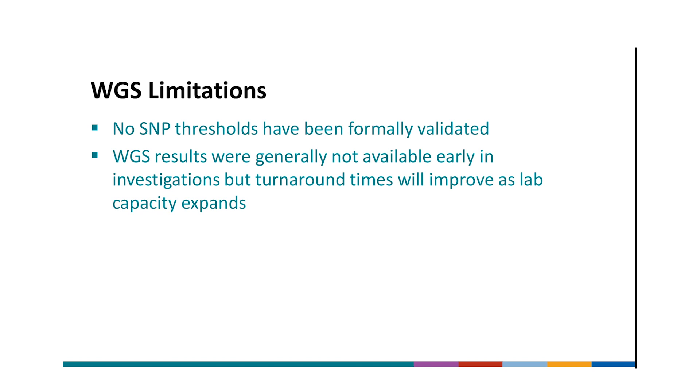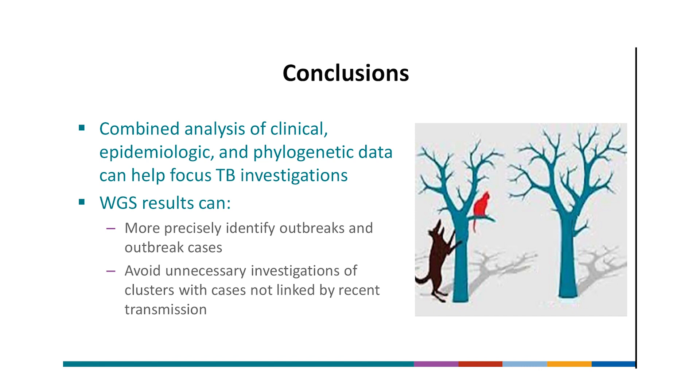It's important to recognize the limitations of our analysis. No SNP thresholds have been formally validated as a gold standard for identifying cases likely linked by recent transmission. While our experience to date suggests the SNP thresholds we use were concordant with epi-links, or lack thereof, a more formal analysis and reporting of those concordance data would be another study. Sequencing results were generally not available early in the investigations we've described. Most sequencing results were analyzed mid-course or retrospectively. The good news is that we're already seeing that the turnaround times are improving as lab capacity for TB sequencing and phylogenetic analysis continues to expand. Analysis methods are also becoming more automated, which is speeding up turnaround times.